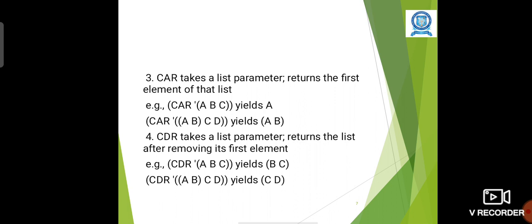CAR takes a list parameter and returns the first element of that list. For example, CAR of apostrophe (A B C) yields A. CAR yields the first parameter of the list. So in our list we have three values A, B, C, but the first parameter only will be returned.